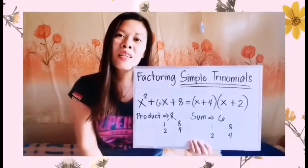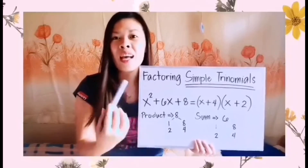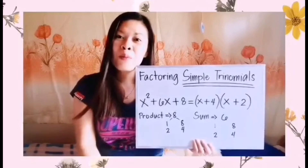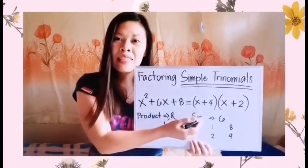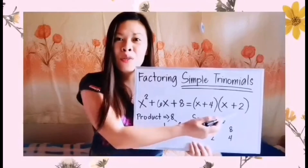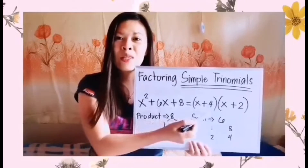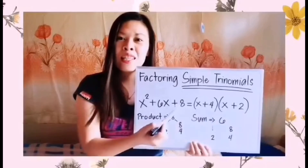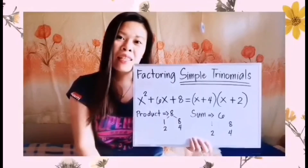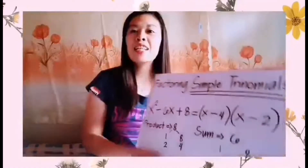If you're not sure about the final answer, you can check by recalling special products. x times x gives x squared. Then 4 plus 2 gives positive 6x. And 4 times 2 gives positive 8. Therefore, our factors are confirmed correct.